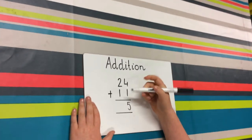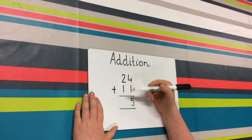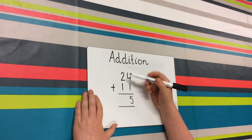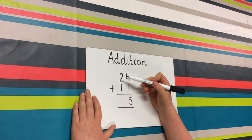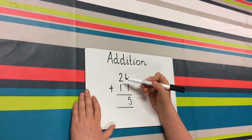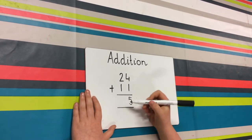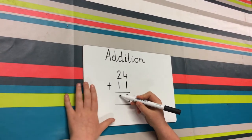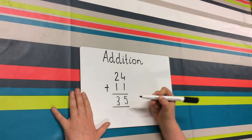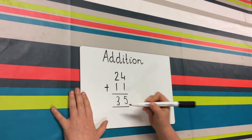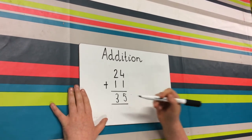Now, 2 add 1, which is the tens column. So that is 3, and you put that just next to the 5. And there is your answer, 35.